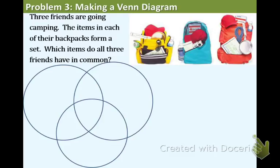Example 3. Three friends are going camping. The items in each of their backpacks form a set. Which items do all three friends have in common? So we have a yellow book bag, a blue book bag, and a red book bag. So first let's label yellow, red, and blue.